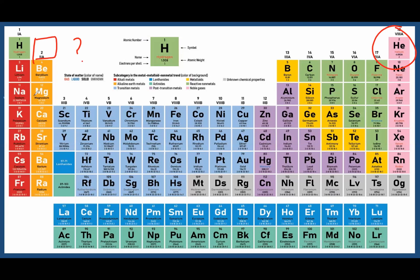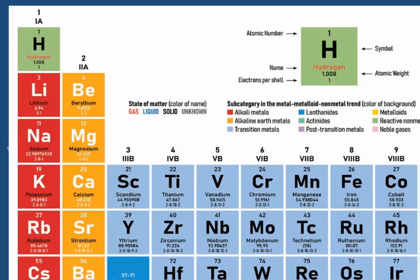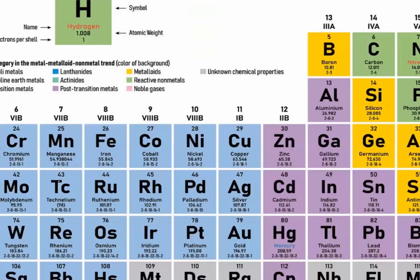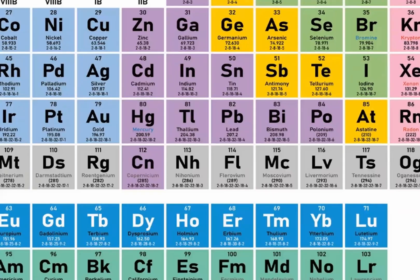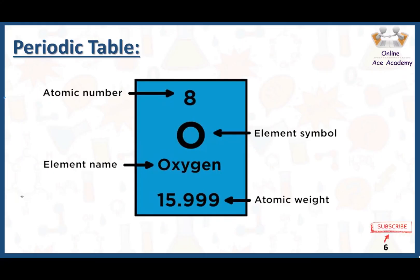The modern periodic table has its distinctive shape because elements are arranged according to different criteria. Elements shown in red are gases, those in black are solids, and those in blue are liquids. Some elements have unknown chemical properties, so we cannot classify them as liquid, solid, or gas. Each element cell provides information such as its name, symbol, atomic number, and atomic mass — for example, oxygen with symbol O, atomic number 8, and its atomic weight.